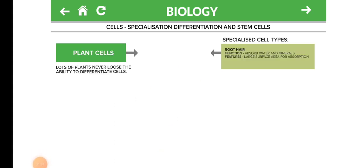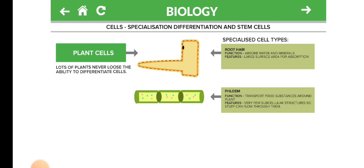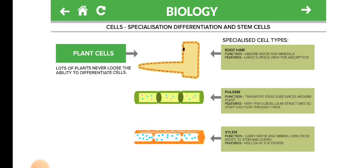Plant Cells. Lots of plants never lose the ability to differentiate cells. Specialized Cell Types: Root Hair. Function: absorb water and minerals. Features: large surface area for absorption. Phloem. Function: transport food substances around the plant. Features: very few subcellular structures so substances can flow through them.